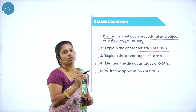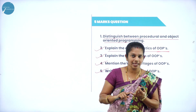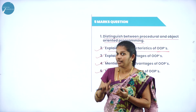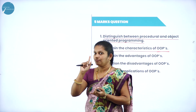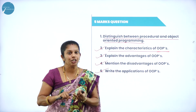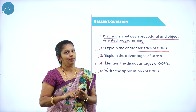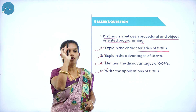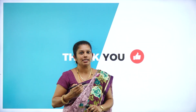These are the major concepts you will study in this chapter: what you mean by class and the features of class, features of Hoops, advantages of Hoops, disadvantages of Hoops, and application of Hoops. These are the four major questions from this chapter. Next class we will meet with a new concept. Thank you all. Bye.